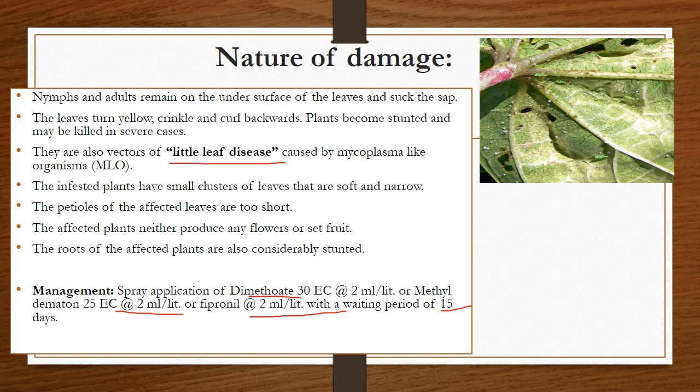One more important species is Empoasca spicitis, which belongs to the family Cicadellidae and is distributed all over India, causing damage in almost all crops including medicinal plants. Its nymphs appear creamy white in color, and the adult is a light brownish leafhopper. Coming to the nature of damage: it acts as a vector for little leaf of brinjal, caused by mycoplasma-like organisms. The damage is similar to leafhoppers — both stages cause damage on the surface of the leaves. Affected leaves turn yellow, then crinkle and curl backwards; plants become stunted and may be killed in severe cases. Infested plants have clusters of leaves that are soft and narrow; the petioles of affected leaves are too short. Affected plants neither produce flowers nor set fruit, and roots of affected plants are also considerably reduced in size. Management includes spraying any insecticide such as dimethoate at 2 ml per liter or methyl demeton 25 EC at 2 ml per liter.